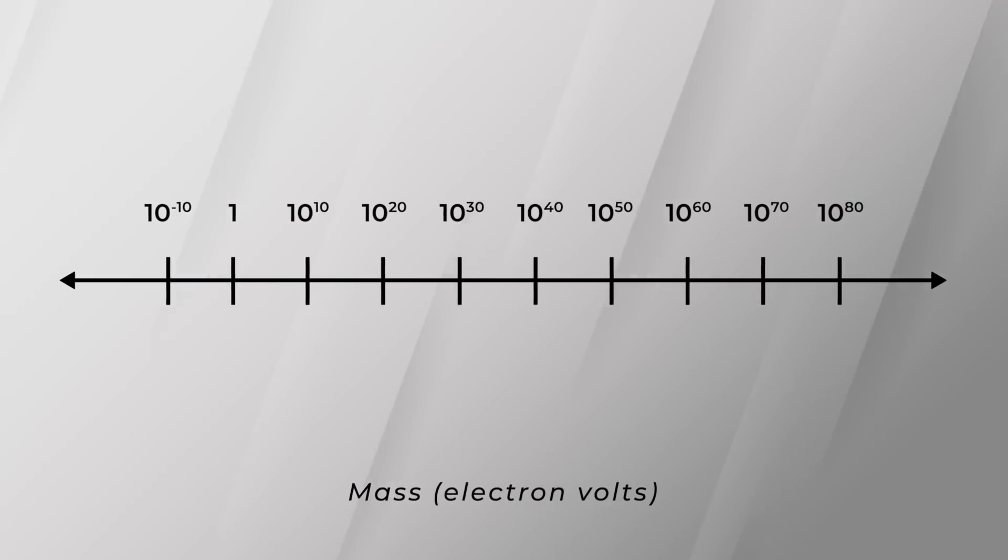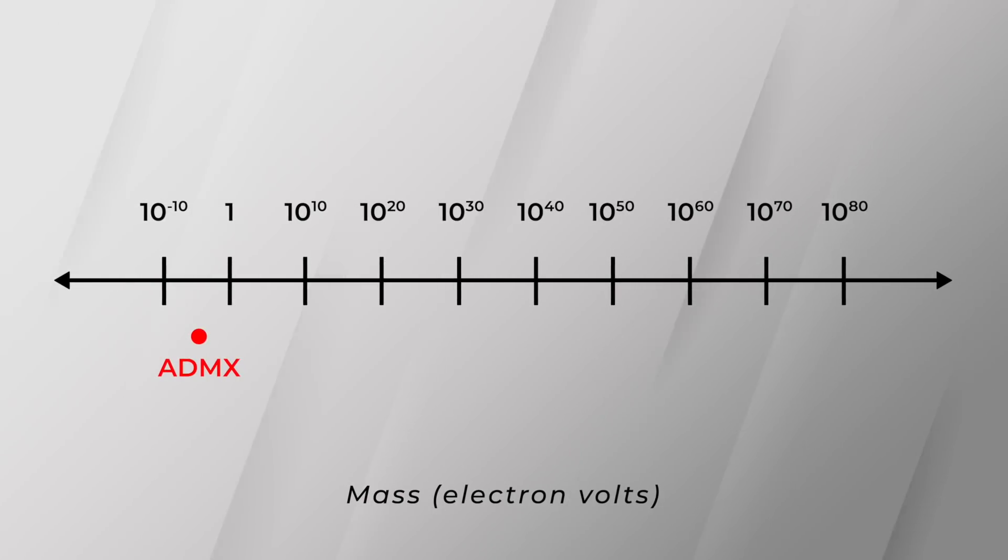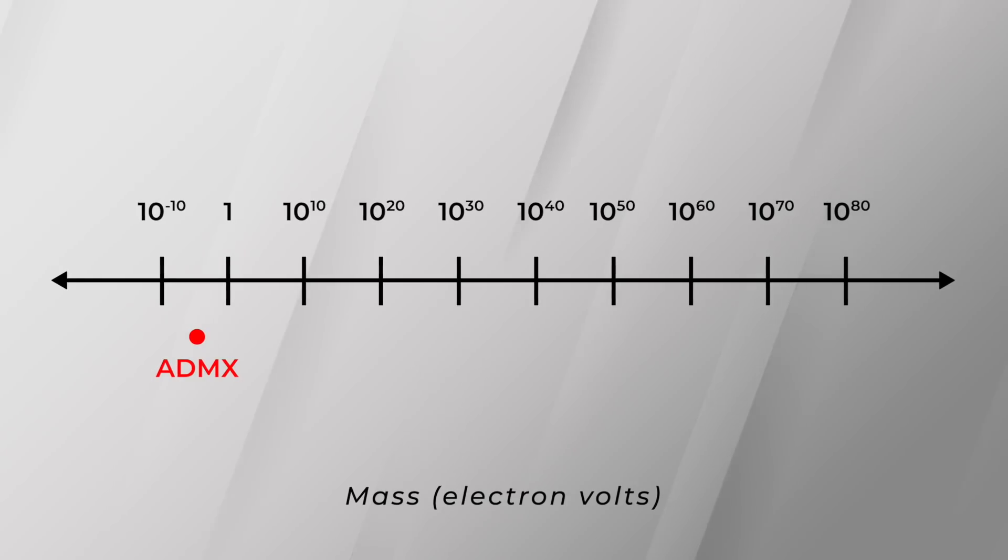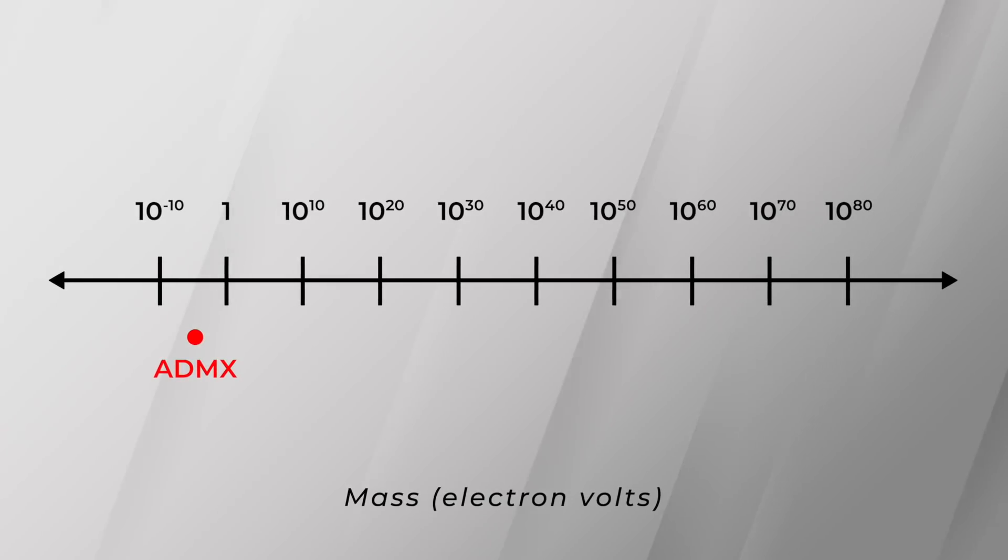The ADMX experiment is designed to look for axions with a mass of about three millionths of an electron volt. This is at the bottom end of what scientists think is reasonable for dark matter. So far, they've found nothing.